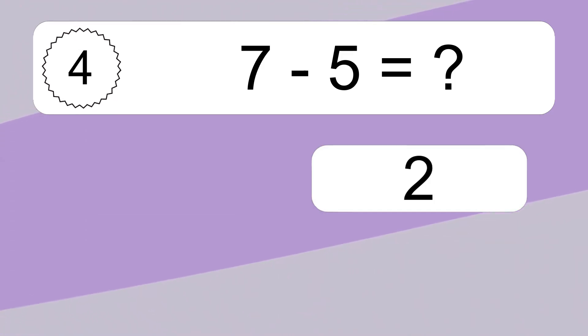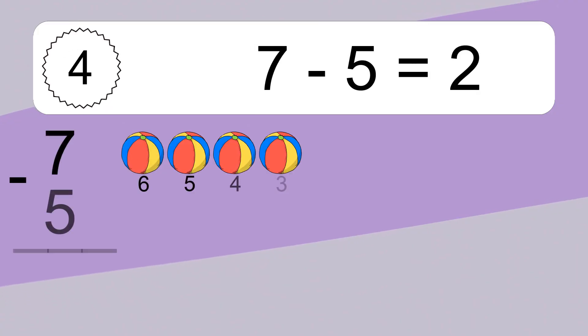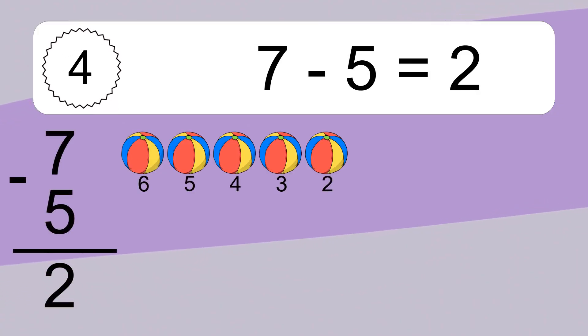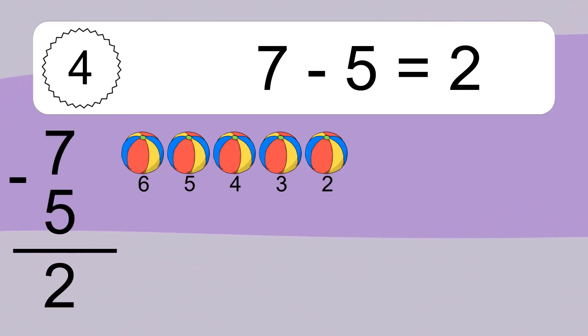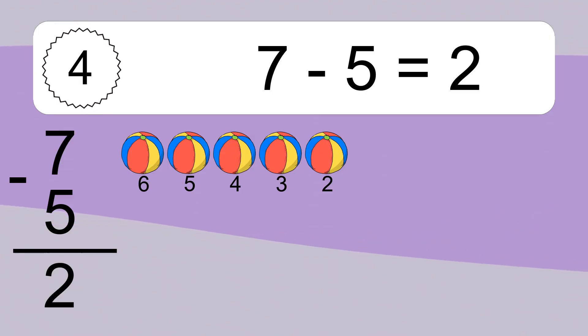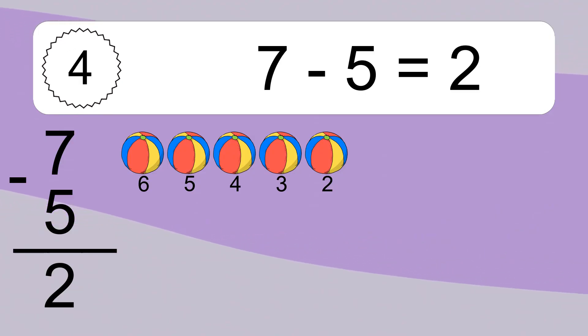7 minus 5 equals 2. Let's count it. 6, 5, 4, 3.